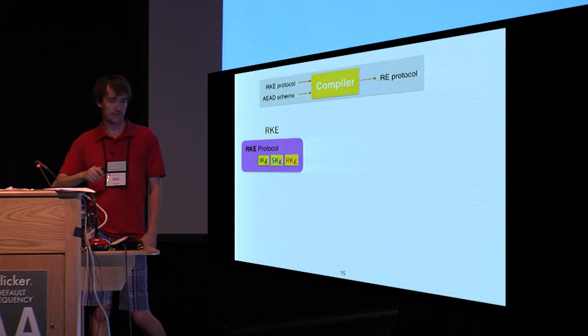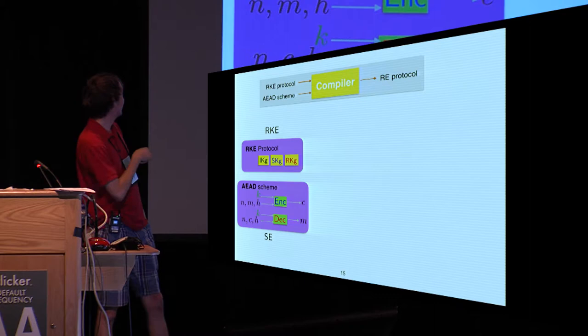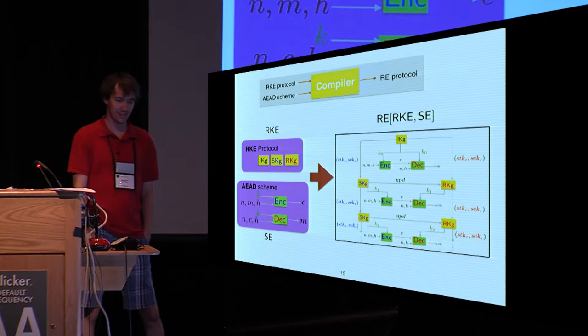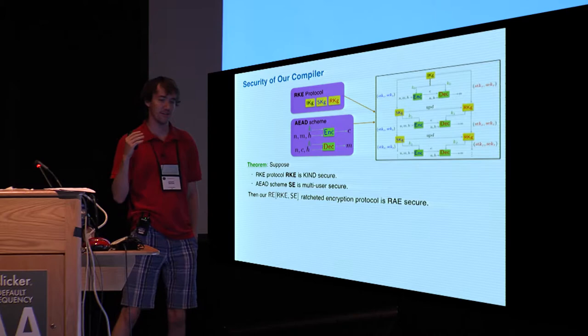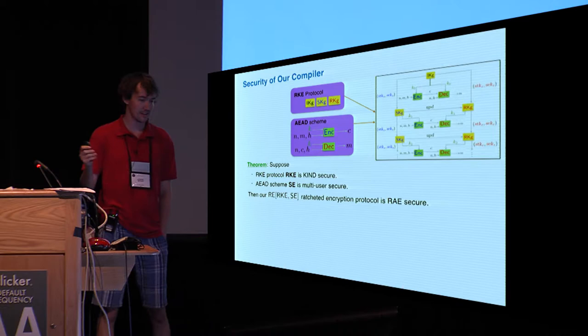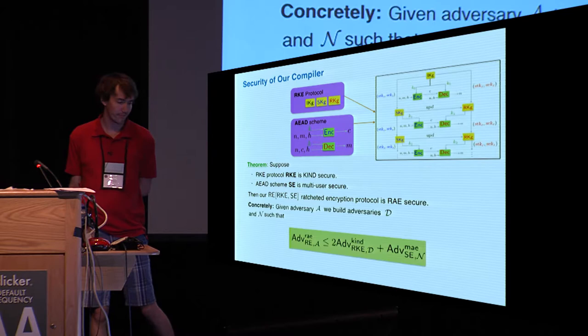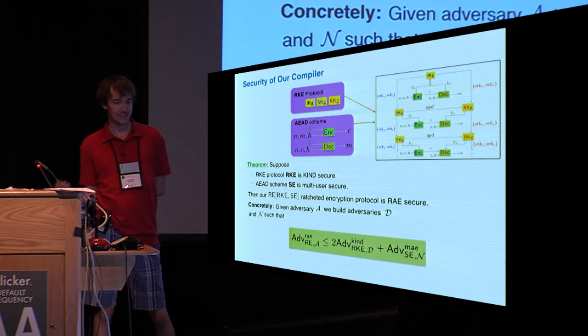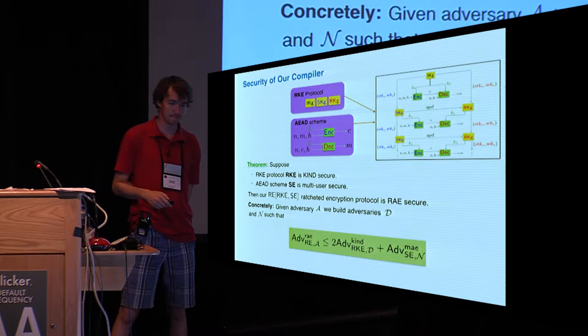Now that we know what our primitives are, how can we do this generic compilation? Well, it's somewhat intuitive, straightforward. You're given the three algorithms from ratcheted key exchange. You're given an AEAD scheme which has encryption and decryption. Again, these five algorithms are exactly the sorts of algorithms that we needed for ratcheted encryption. You just plug them in into the appropriate places. And of course, we have to prove they're secure. And we're able to prove that this ratcheted encryption protocol will achieve the desired security notion, assuming that the underlying key exchange achieves our KIND security and that the AEAD encryption scheme is multi-user secure. We have some adversary against the encryption protocol. We build adversaries against the underlying components and can obtain this shown relationship on their advantages.